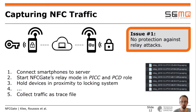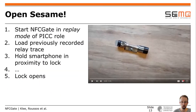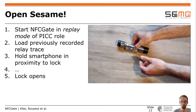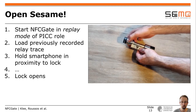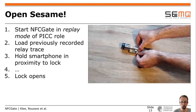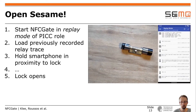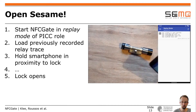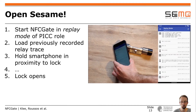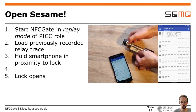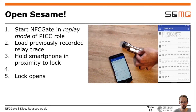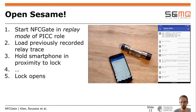Our first step in analyzing the protocol was to capture the communication between the lock and the transponder. We connected two smartphones in NFCGate relay mode — one with a PICC role and the other with a PCD role — to a server, then held the devices in proximity to the door locking system. We see that the lock and transponder exchange data, meaning the system does not protect against relay attacks. This let us collect multiple relay traces in PCAP-NG trace files. After that, we used NFCGate's replay mode to test the system against replay attacks. We select a previously recorded relay log of a successful unlock attempt, hold a smartphone in tag role in proximity to the lock, and the lock opens without requiring a legitimate tag.